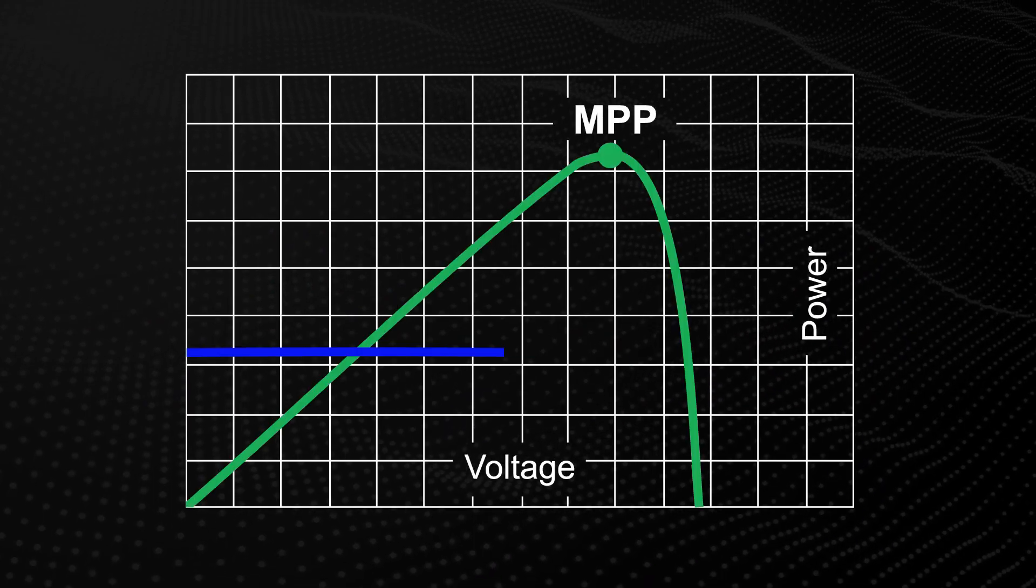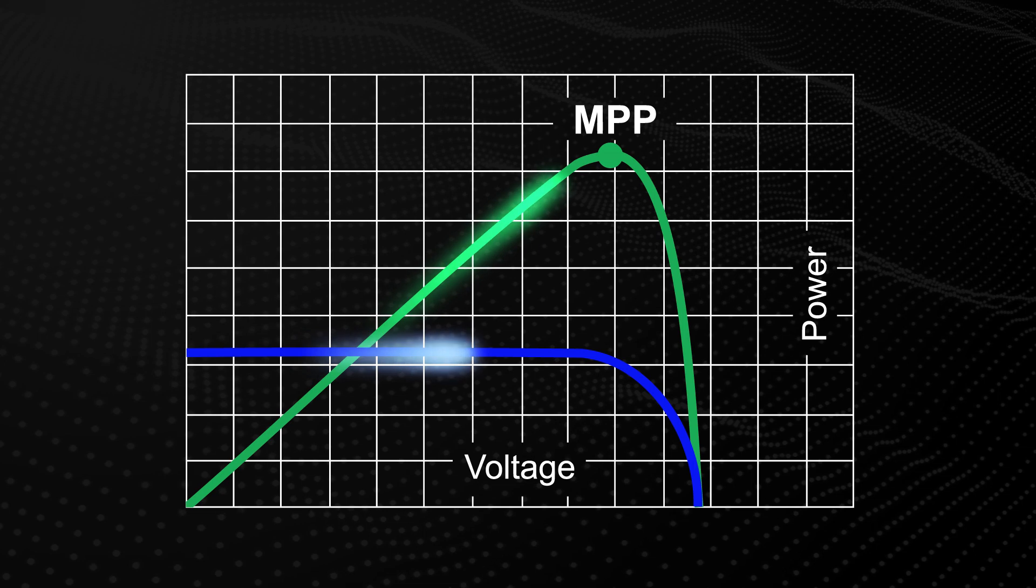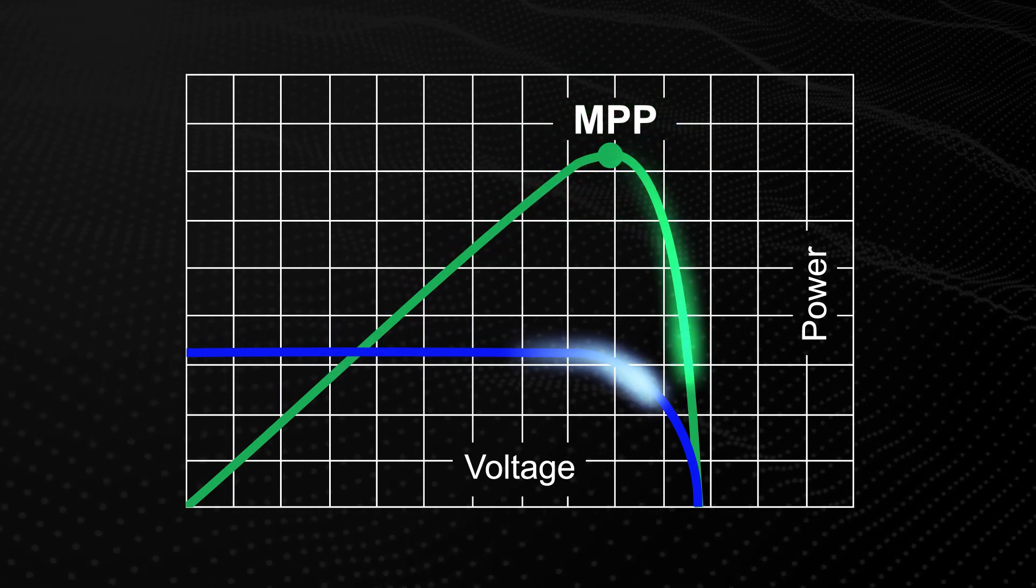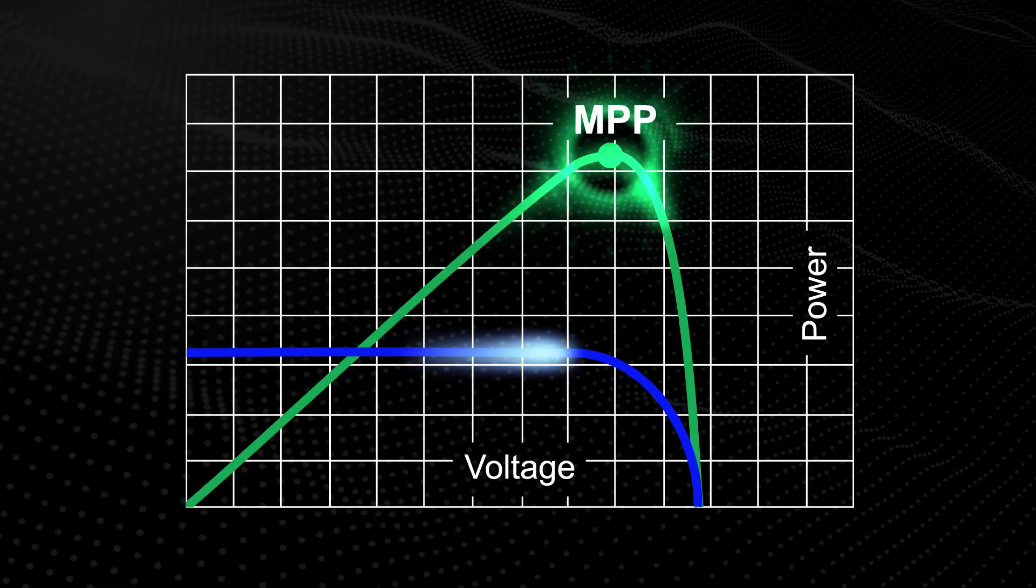ELR series loads also support maximum power point tracking for use in testing solar panels. With MPP tracking, the load simulates the functionality of a solar inverter and has various modes for identifying and tracking the maximum power point.